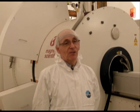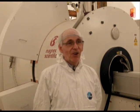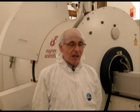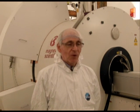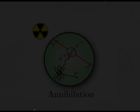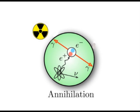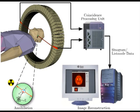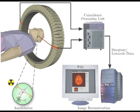The electron and positron annihilate, producing two high energy gamma rays, which are then detected and allow you to map the distribution of the radioactive tracer in the patient.